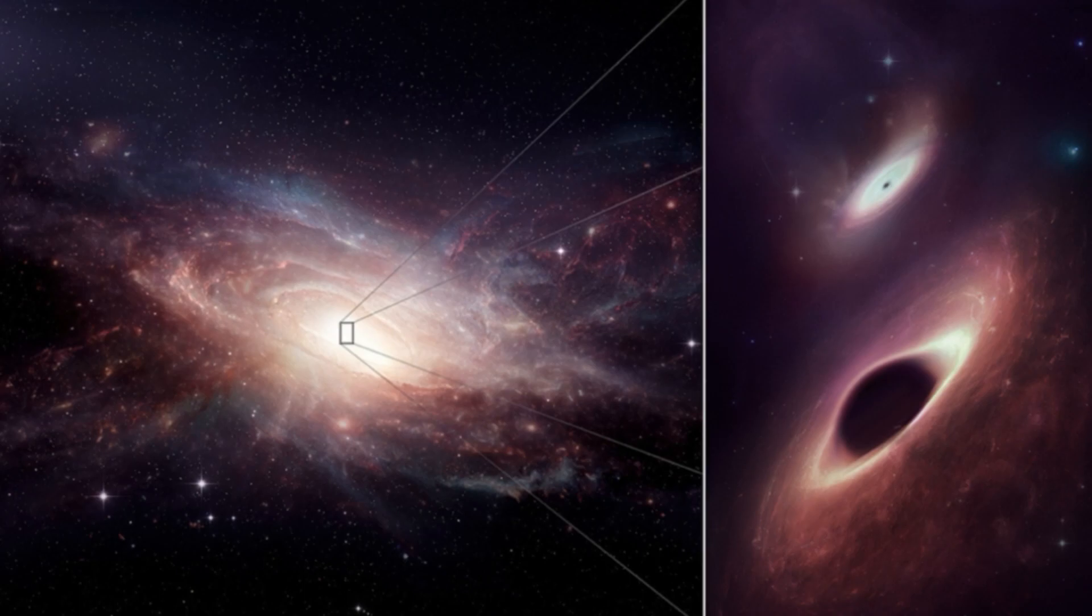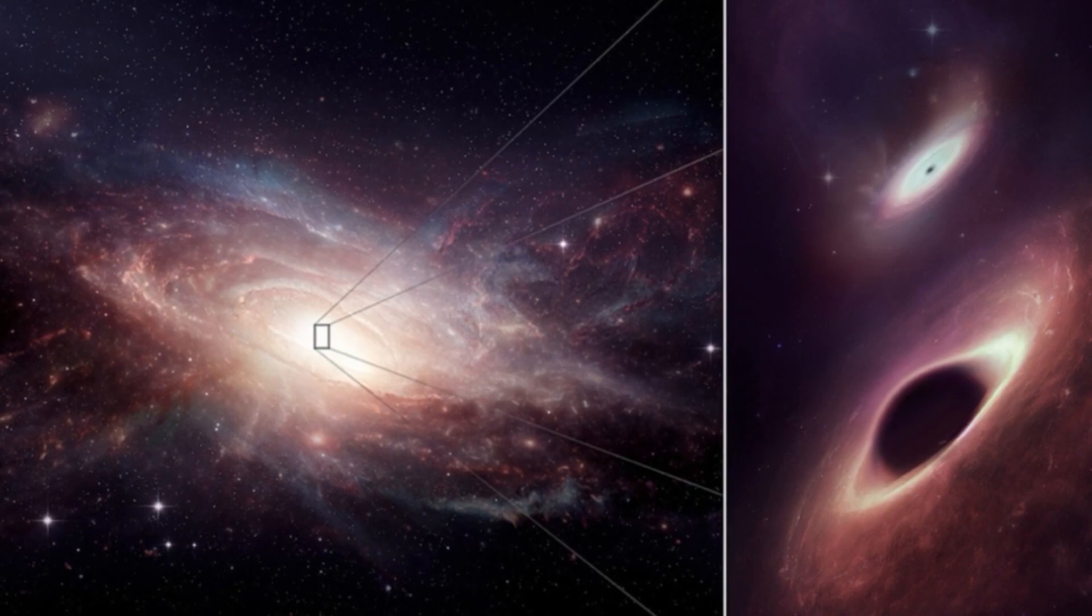The researchers combined observations from the Chandra X-ray Observatory, the Hubble Space Telescope, the Very Large Telescope in Chile, and the Keck Observatory in Hawaii, all of which provided data in different wavelengths, allowing for a detailed look at the merged galaxy.